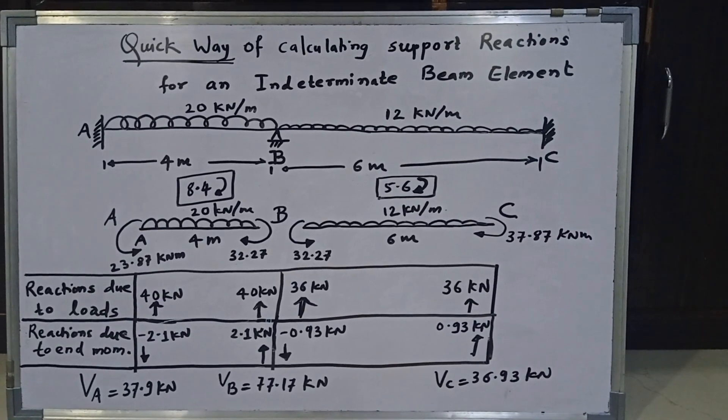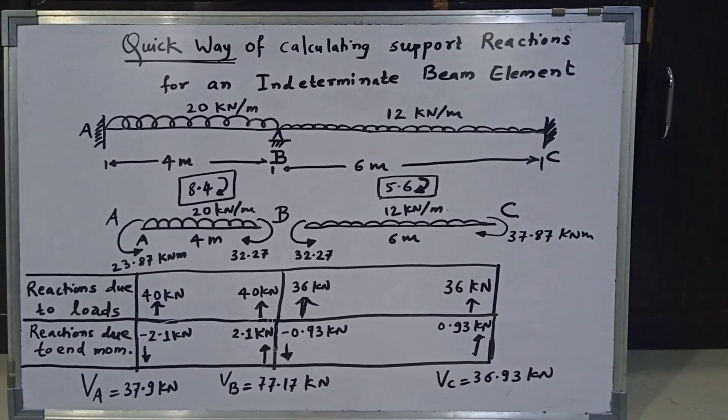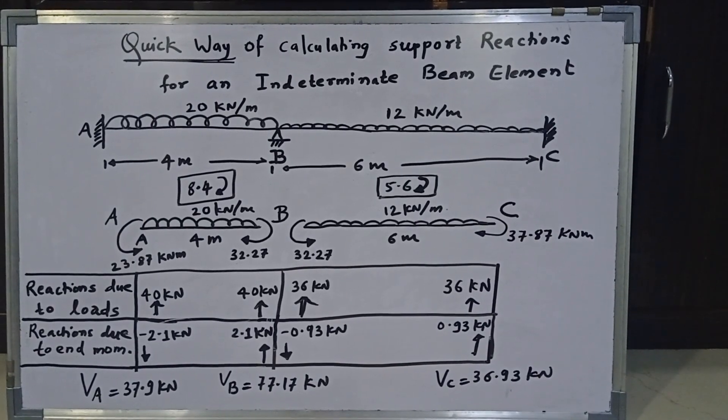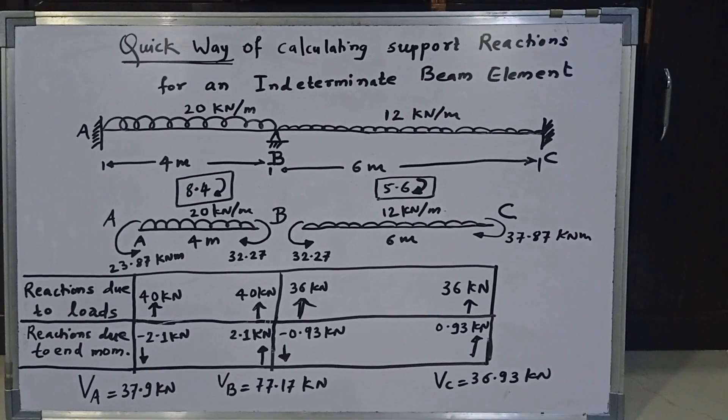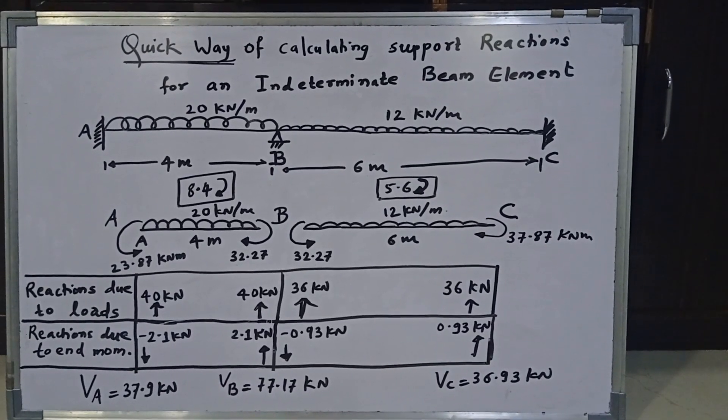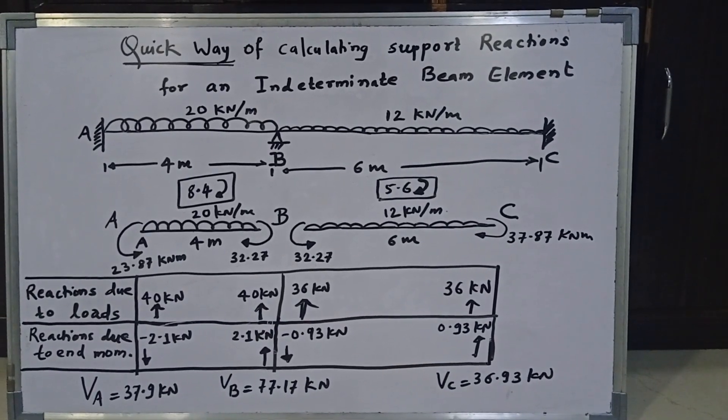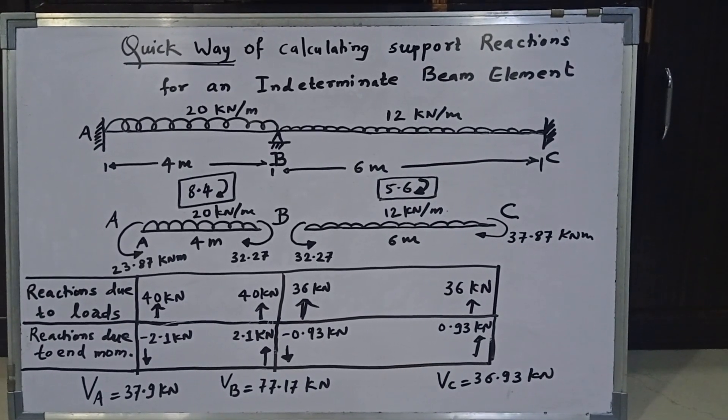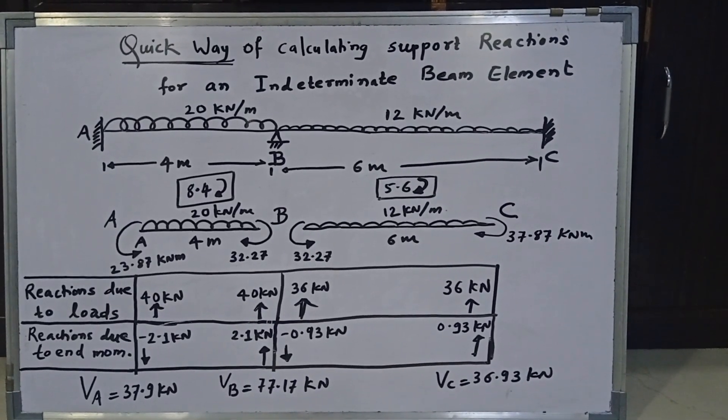Now, we know that part A-B is subjected to a net clockwise moment of 8.4 kN meter and its length is 4 meter. And therefore, the reactions at A and B will be M by L and M by L equal and opposite. So M is 8.4 divided by 4, it is 2.1. Therefore, at A it is minus 2.1 kN because it is downwards and at B it is 2.1 kN plus because it is upwards.